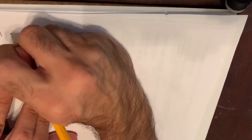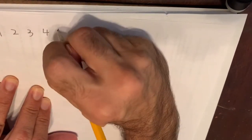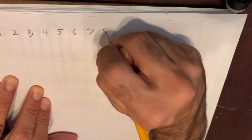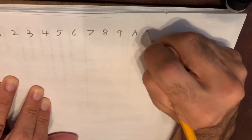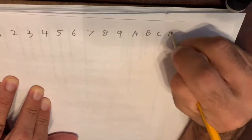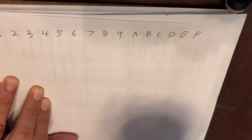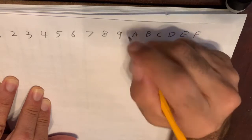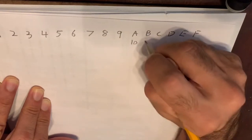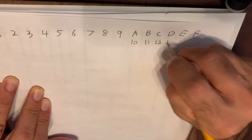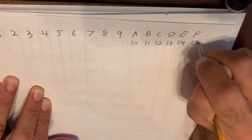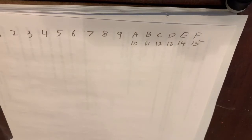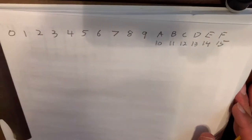So our hexadecimal digits are 0, 1, 2, 3, 4, 5, 6, 7, 8, 9, A, B, C, D, E, and F. Remember that the decimal equivalent of the hexadecimal numeral A is 10, B is 11, C is 12, D is 13, E is 14, and F is 15. There are actually 16 hexadecimal digits because 0 does in fact count as a digit.